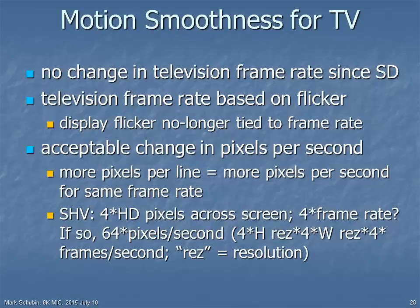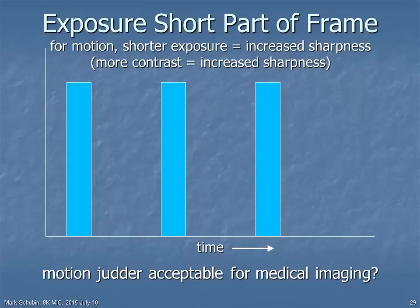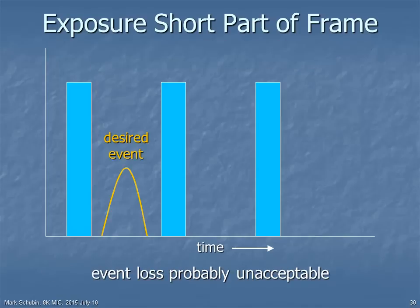If acceptable motion smoothness can be described in terms of pixels per second, then if you increase the spatial resolution — providing more pixels — you'd need to have increased frame rate to have the same number of pixels per second. For medical imaging, smooth motion might not be required, so reduced exposure per frame might be used to increase the dynamic resolution. It's important, however, to have sufficient temporal resolution to show desired events — a short exposure time might mean a desired event happens while the shutter is closed and you don't get to see it.